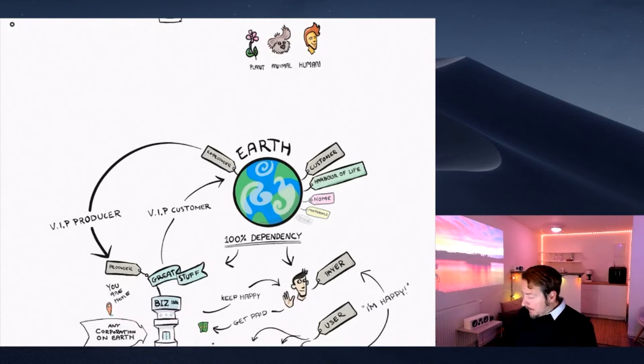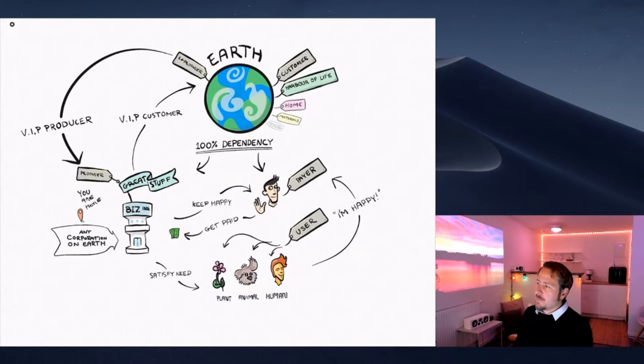So all I've done here is adding the kind of the flow of who we need to keep happy. Without Earth, nobody's necessarily happy. So we have the VIP customer there, which is Earth. We also have the VIP producer, which is Earth. And all corporations on Earth are very dependent on it.